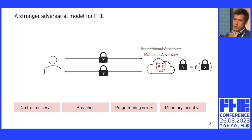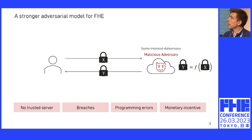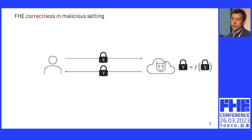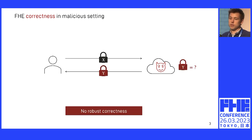So for all these reasons, we want to look at how FHE fares in the context of a malicious adversary. And it's actually extremely brittle in this setting. There's an obvious implication for correctness: if the cloud can deviate from the protocol, then you have no guarantee about the results, so you lose the correctness guarantee of FHE.